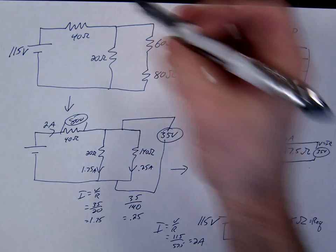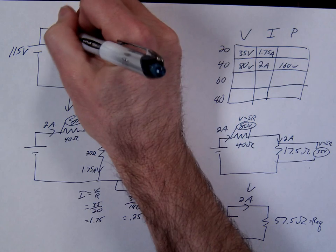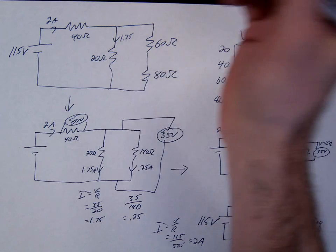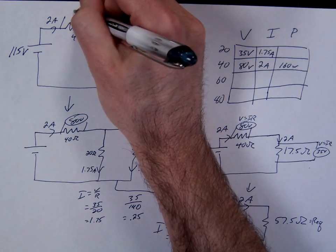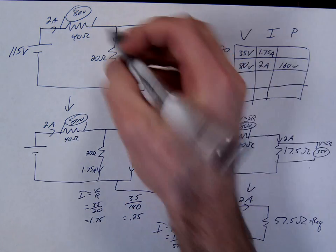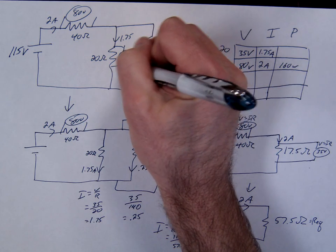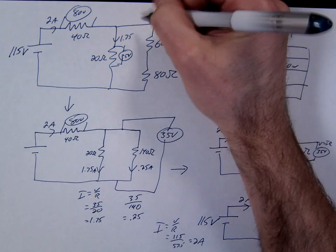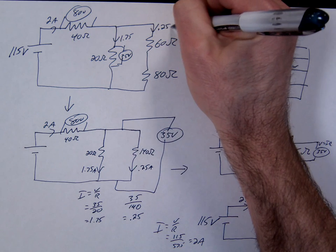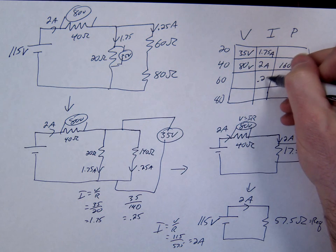So let's go place what we know over here. So this was 1.75, this was 2, this was 80, and this was 35. And we just found that current, so 0.25 through that branch. So notice we can now find 0.25. We can enter this, 0.25, 0.25.